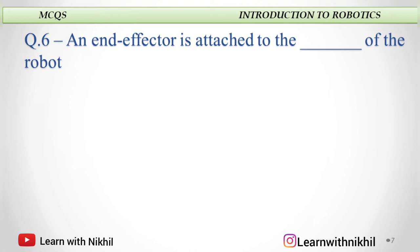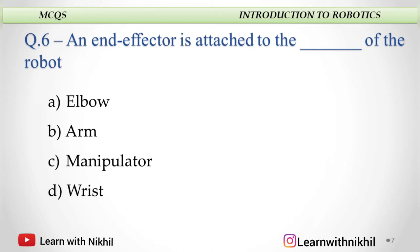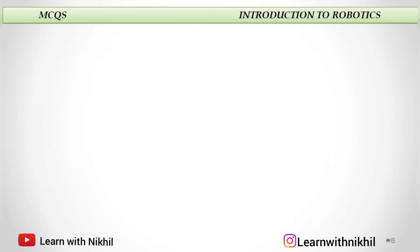Next: An end effector is attached to the dash of the robot. A. Elbow, B. Arm, C. Manipulator, or D. Wrist. End effector is the end part of the robot and it is always attached to the wrist.